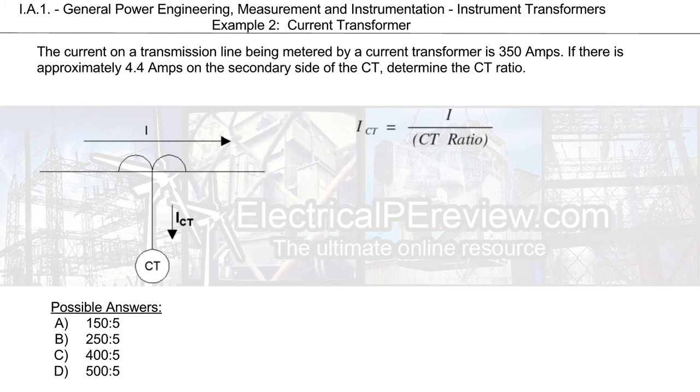We're going to start with our most basic current transformer formula. We know we can find the current in the CT as a fraction of the primary line current divided by the CT ratio. We can manipulate this equation so that we can solve for the CT ratio as our primary line current divided by our CT current, both of which is given to us in the problem statement.